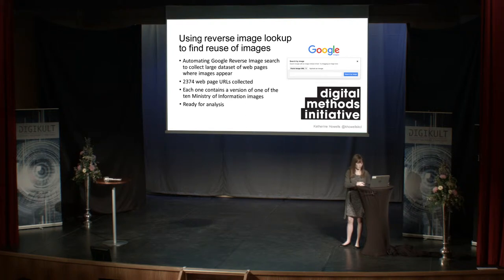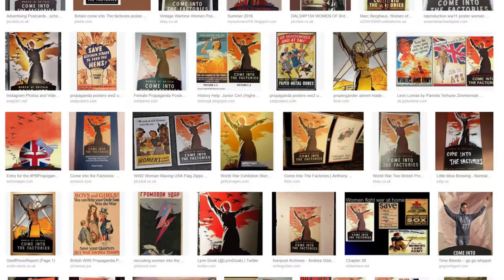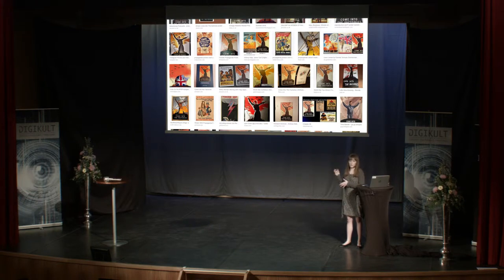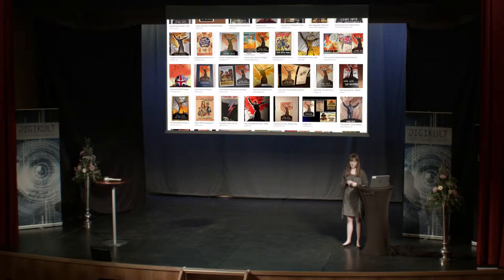Using Google reverse image search, we can give the tool the image we're looking for and create a large database of different websites where that image appears. This was also automated using a tool from an organisation called the Digital Methods Initiative, based in Amsterdam, which created a simple automation tool whereby you enter the image and it scrapes all results of the Google reverse image search — giving you thousands of results if there are thousands. I collected 2,374 web pages containing the 10 images. This also picks up versions of images that might not be easily found otherwise, such as when somebody takes a photograph of an image in a museum, or when the image has been slightly adapted with words or content changed.